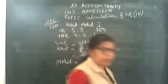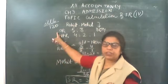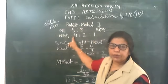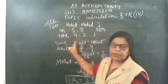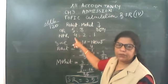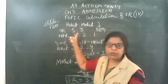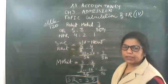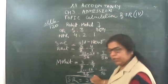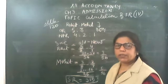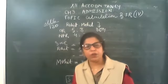Just now I explained illustration 6 — Rohit and Mohit, old ratio 5:3, new ratio 4:1. Simple, only one formula, that is sacrifice ratio, which is old minus new. Rohit's old ratio is 5/8, new ratio is 4/7. Mohit's old ratio is 3/8, new ratio is 2/7. Calculate sacrifice ratio — it comes to 3:5. Only old partners will sacrifice. This is illustration 6, page number 120 of NCRT.